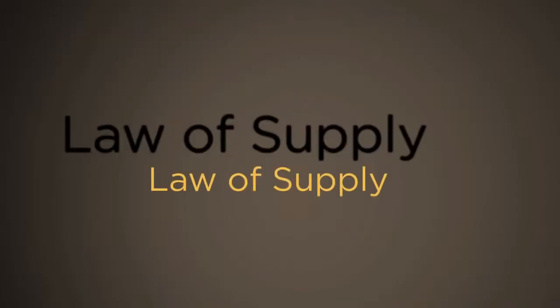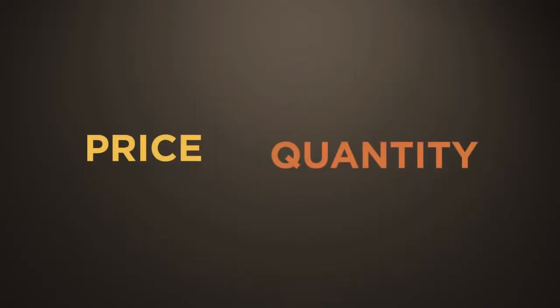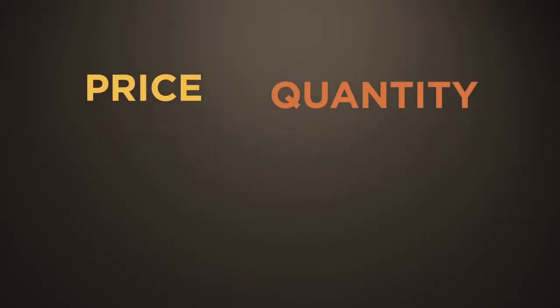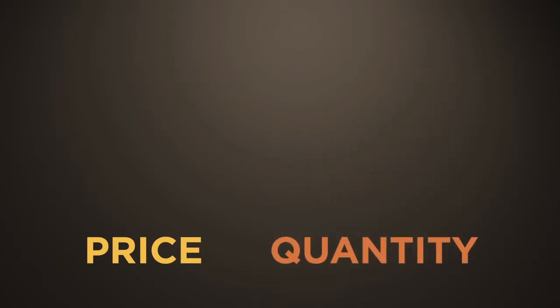Now we need to look at the other side of the market and examine the sellers or producers. The quantity supplied of any good or service is the amount of a good that sellers are willing and able to sell at a particular price. Many factors affect supply, but only price can determine the quantity supplied. When the price of a good rises, the quantity supplied of that good will increase. The reverse is also true. If the price of a good decreases, the quantity supplied of that good will decrease.